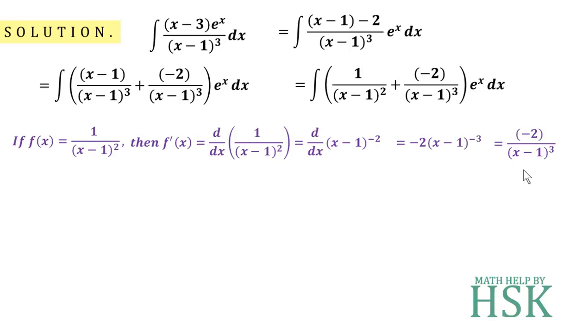So we have the integral in a form of e to the power of x into a function plus its derivative. Using the result that if we have a function in the form e to the power of x into f(x) plus f dash x, then its value is equal to e to the power of x into f(x) plus integral constant c.